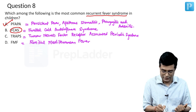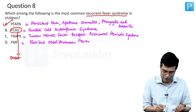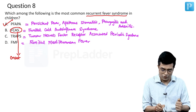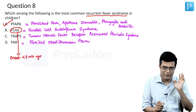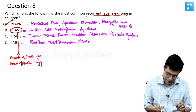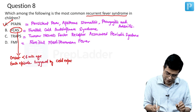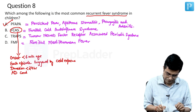Regarding FCAS — Familial Cold Autoinflammatory Syndrome — the onset occurs before 6 months of age, so it presents in early infancy. Each episode is triggered by exposure to cold, and the duration of each episode is less than 24 hours. It is also an autosomal dominant condition.